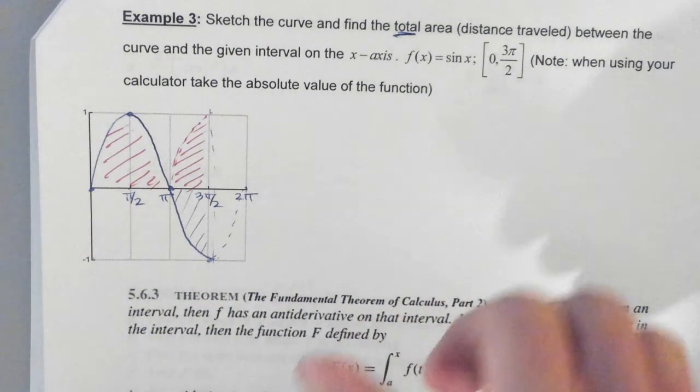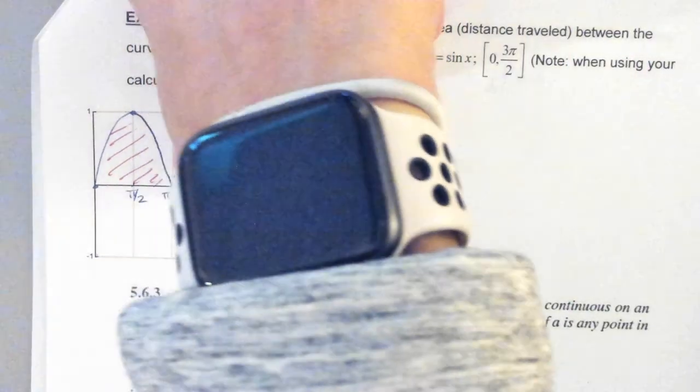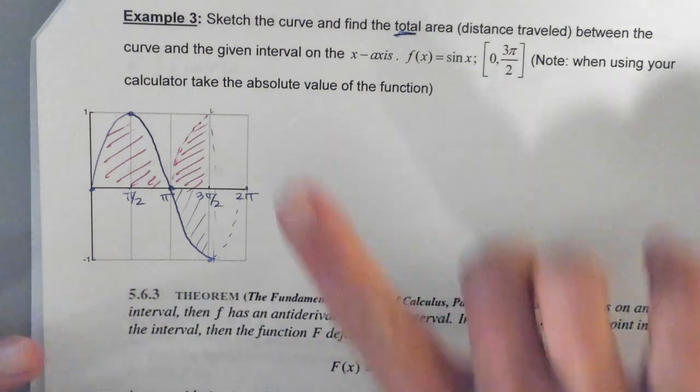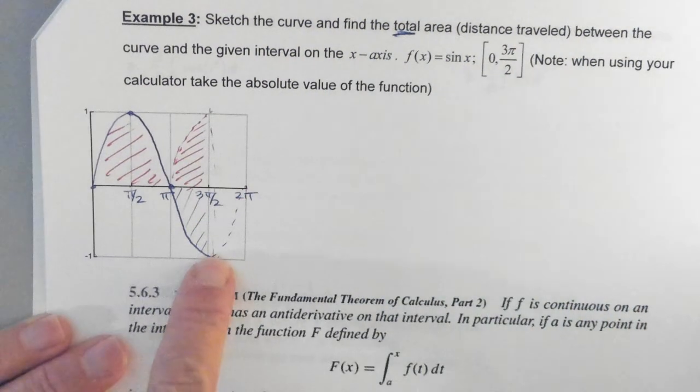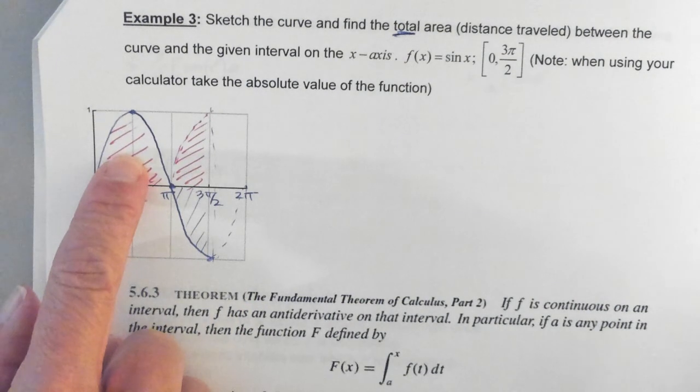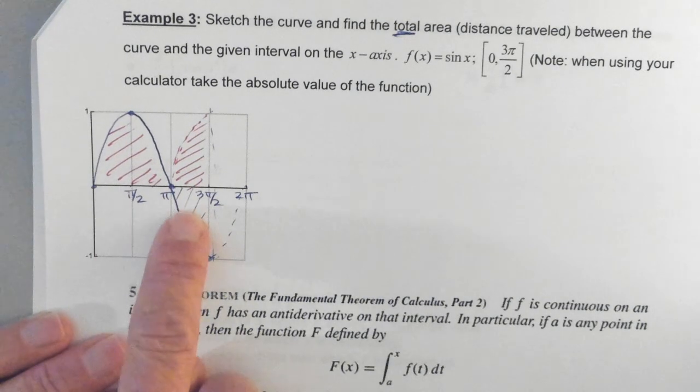So when I'm looking at the graph, this portion of the graph is the true graph. So that means this area up here is positive because the area is above the x-axis. And we know that this portion of the graph is below the x-axis. Therefore, that area would be considered negative.